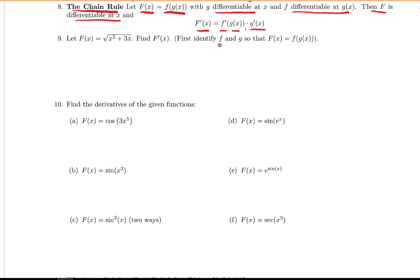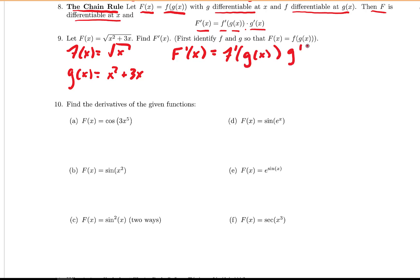We're going to take the derivative of √(x²+3x). First, identify f and g: the outer function f of x is the square root of x, and g of x is x squared plus 3x. Following the chain rule, take the derivative of the outside function — which is 1 over 2 times the square root of x — and evaluate it at g of x, then multiply by g prime of x. That gives us 1 over 2 times the square root of g of x, times g prime of x.